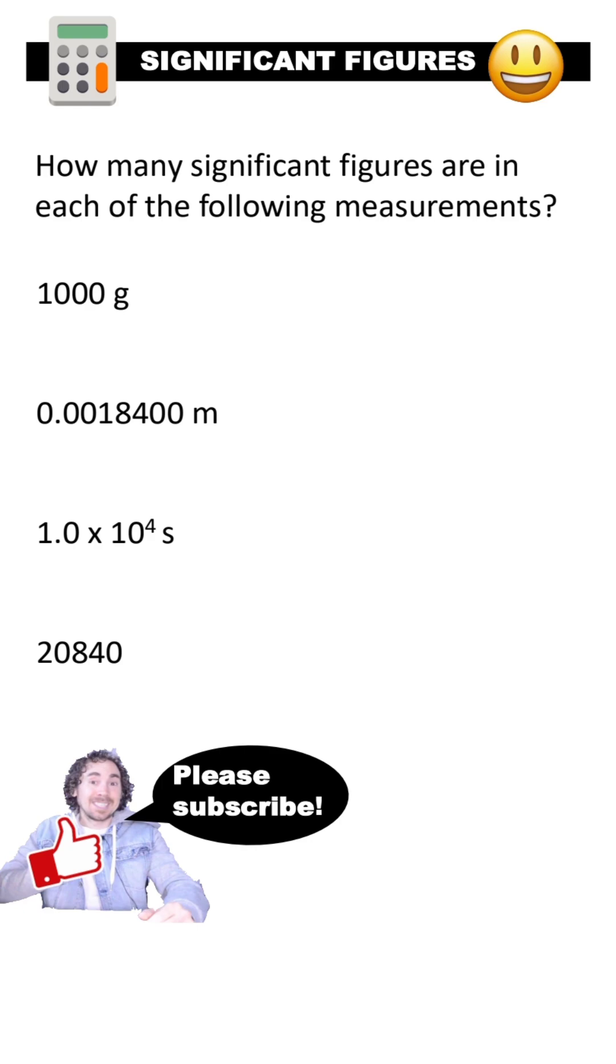See if you could figure out how many significant figures are in these numbers. Pause the video if you need more time. The first measurement only has one significant figure, because the trailing zeros are not significant since there is no decimal.